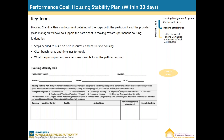Performance goal number two: Housing Stability Plan within 30 days. A Housing Stability Plan is a document detailing all the steps both the participant and the provider will take to support the participant in moving towards permanent housing. It identifies the steps needed to build on held resources and barriers to housing, clear benchmarks and timelines for goals, and what the participant or provider is responsible for in the path to housing. Here's an example of a housing stability plan.